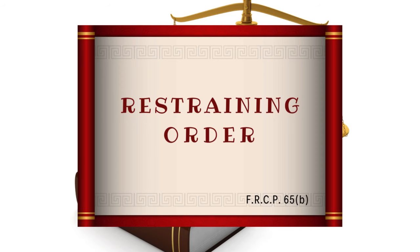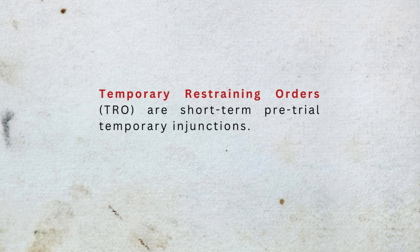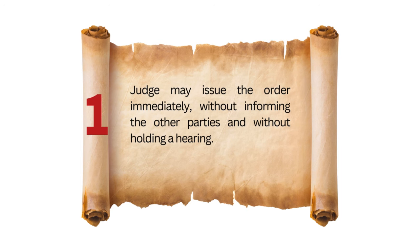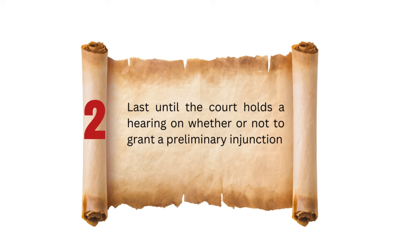Now let's talk about the temporary restraining order. The temporary restraining order, or TRO, is a short-term, pre-trial, temporary injunction. To obtain a TRO, the party seeking the order must show that if the order is not put in place, he or she will suffer immediate irreparable injury. Thus, a judge can issue the order immediately without informing the other parties and without holding a hearing. The order will last until the court holds a hearing on whether or not to grant a preliminary injunction.